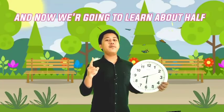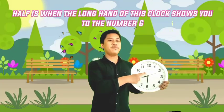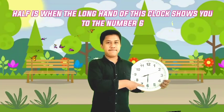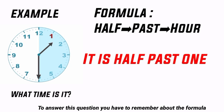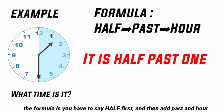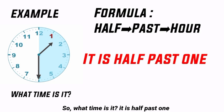And now we're going to learn about 'half.' Half is when the long hand of this clock shows you to number 6. So if the long hand shows you to number 6, you use 'half.' The formula is: say 'half' first, then add 'past,' then the hour. So what time is it? It is half past 1.